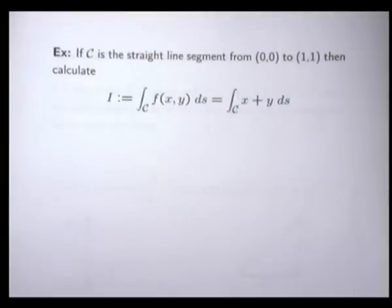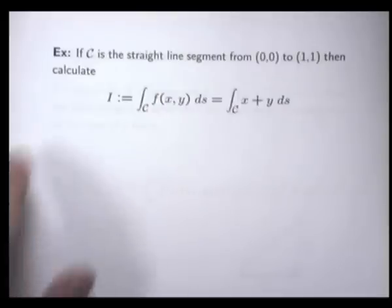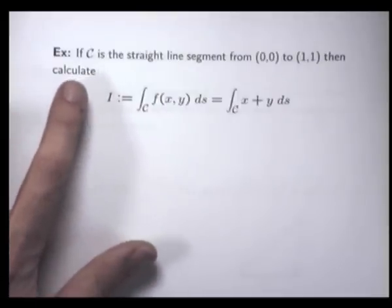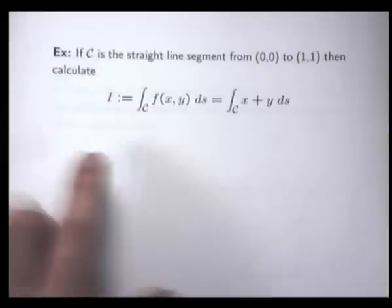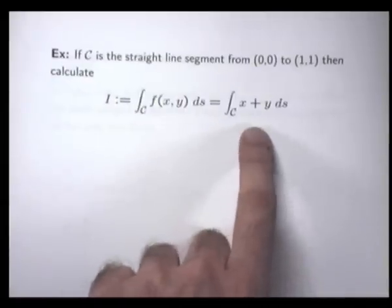So let's get down to a problem. Let's actually see how you work with this path integral. All right, so we're told here that C is the straight line segment from the origin to (1,1). Calculate this line integral.